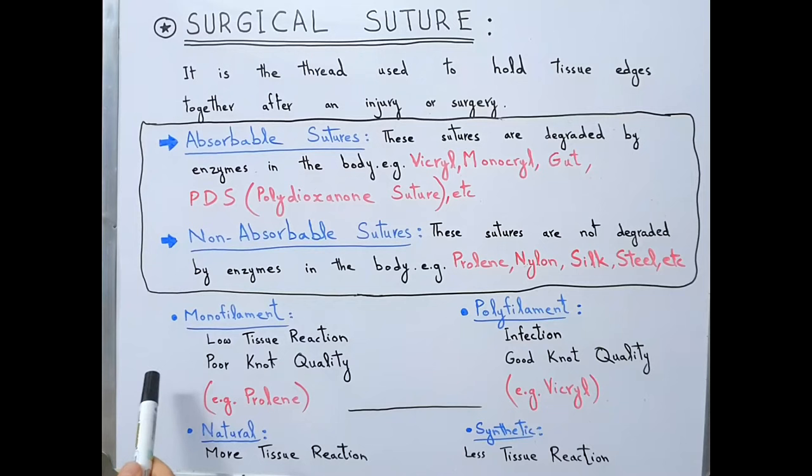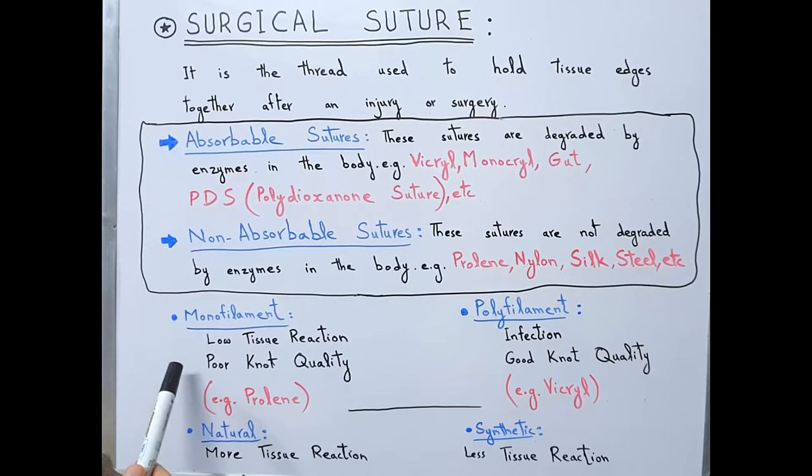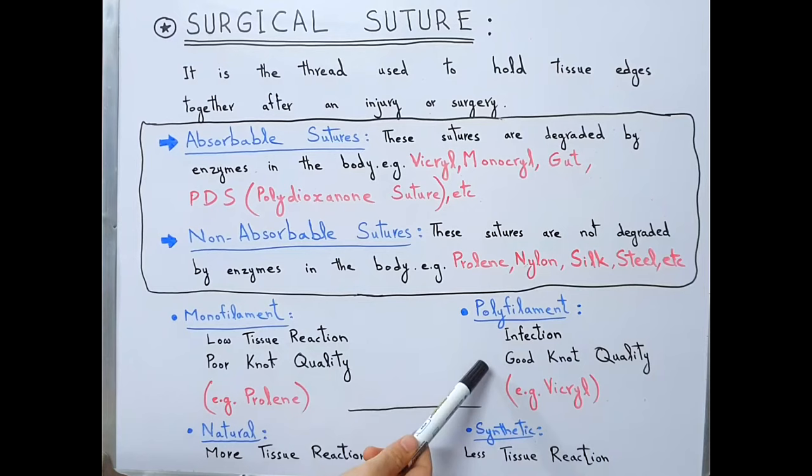According to another classification, sutures can be put into monofilament and polyfilament categories. Monofilament has the advantage of low tissue reaction, but its knot quality is poor — that is its disadvantage. Poor knot quality means the knot is likely to untie, which can also be called poor knot security. An example is Prolene.